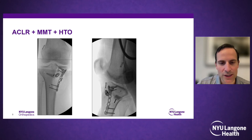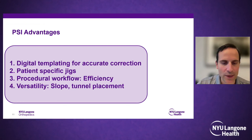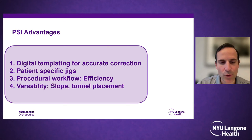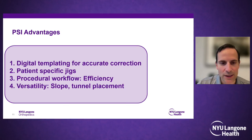This is exactly the type of situation where patient-specific instrumentation guides are helpful. Advantages include templating digitally ahead of the case — planning your cuts, drill holes, instrument placement, and implant placement before you're in the operating room. Patient-specific jigs help decrease implant prominence and tunnel convergence. Cases become more efficient, time savings means cost savings, and it allows for significant versatility in affecting slope or tunnel placement.